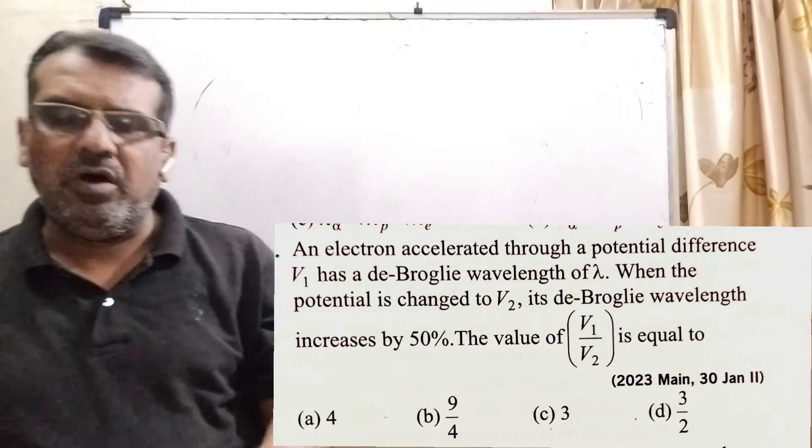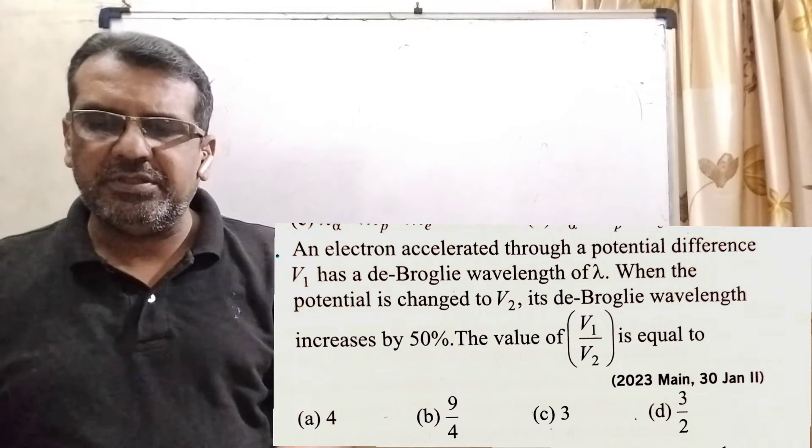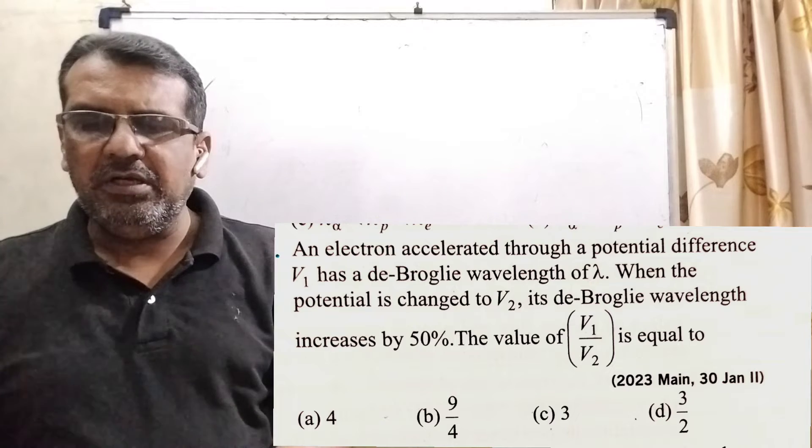Here we have four options: (a) 4, (b) 9/4, (c) 3, and (d) 3/2.